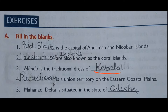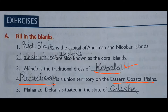Question number three: Mundu is the traditional dress of dash. We have already read about the different states and their traditional dresses. Mundu is Kerala's traditional dress. Mundu is also called lungi, and 'westy' is what it is called in Tamil Nadu. In Tamil Nadu, westy is worn with a shirt; in Kerala, mundu is worn with a shirt — it is a long cloth worn by males. Question number four: dash is a union territory on the eastern coastal plains. The answer is Puducherry.